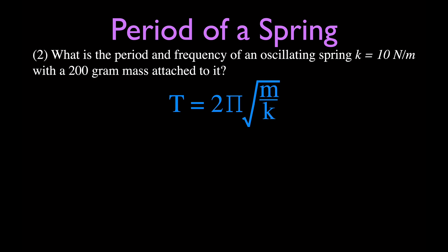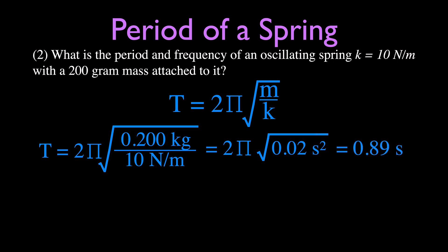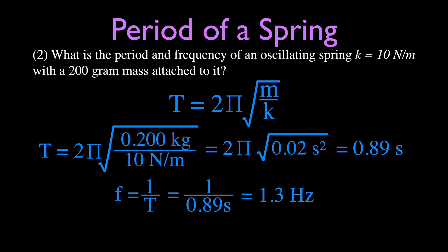Plugging in the values — make sure to convert the mass to kilograms, so it's 0.20 kg — we get 2π times the square root of 0.20 divided by 10, which is 0.02. Taking the square root and multiplying, the period is 0.89 seconds. Using the inverse relationship, the frequency is 1 over 0.89, which gives 1.3 hertz.